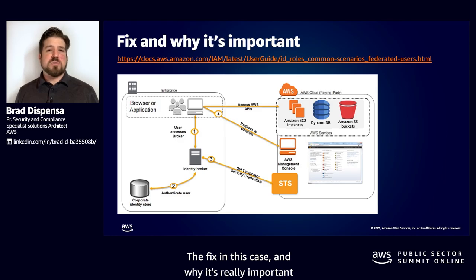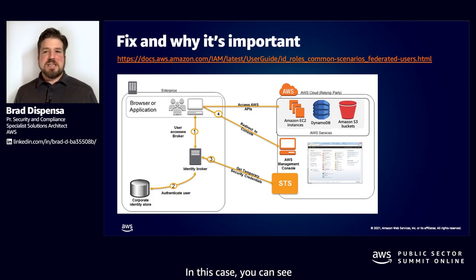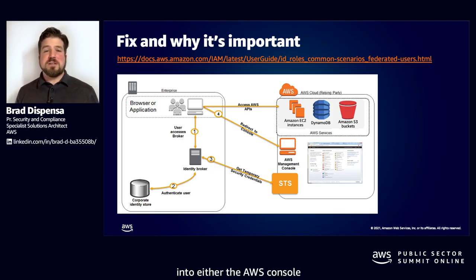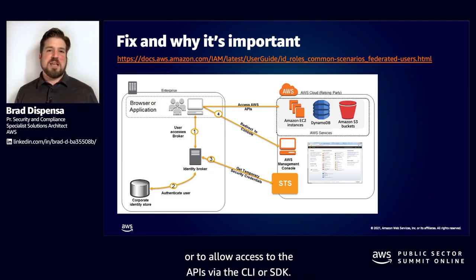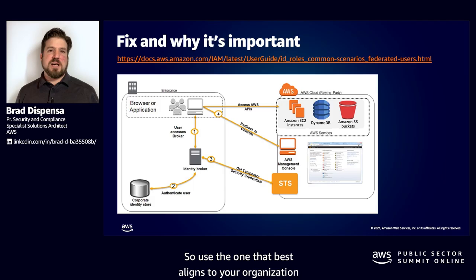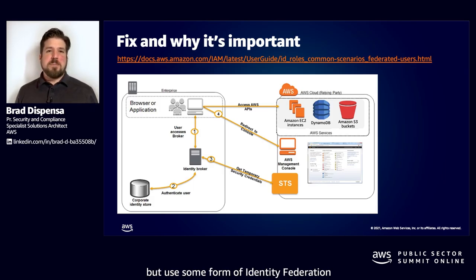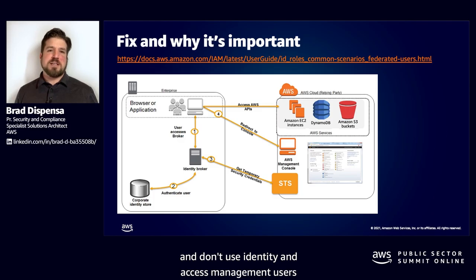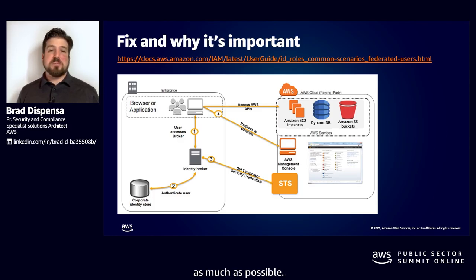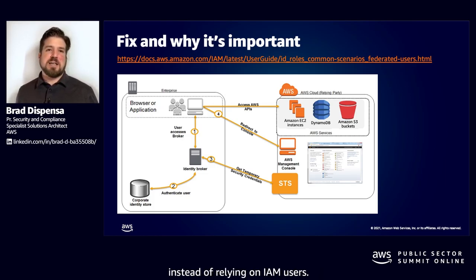The fix is using identity federation. You can see a centralized identity broker being used to federate the user into either the AWS console to get short-lived STS credentials or to allow access to the APIs via the CLI or SDK. There are a number of different federation options that AWS supports — use the one that best aligns to your organization. Use some form of identity federation and don't use IAM users as much as possible. Even for machine-to-machine purposes, you can use federation instead of relying on IAM users.